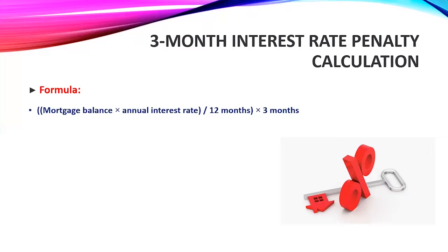To calculate the three-month interest rate penalty, the formula is: take the mortgage balance and multiply it by the annual interest rate — in this case 5.5% — then divide by 12 to get the monthly amount, and then multiply that by three months.